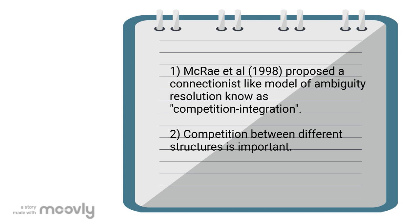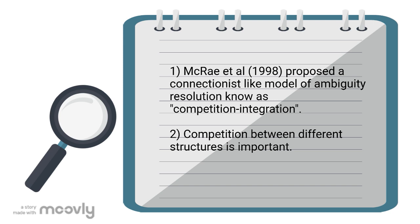In addition, McRae et al. proposed a connectionist-like model of ambiguity resolution known as competition integration. The competition between different structures is important because the more committed we are in interpreting a sentence, the more difficult it is for us to disambiguate a different sentence.